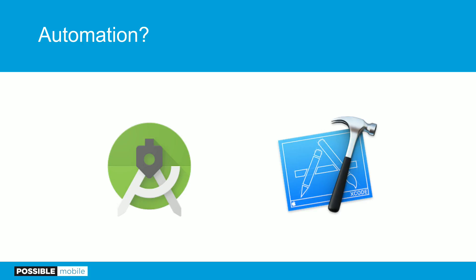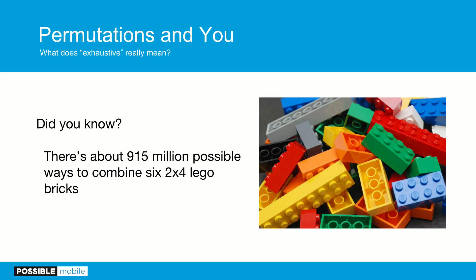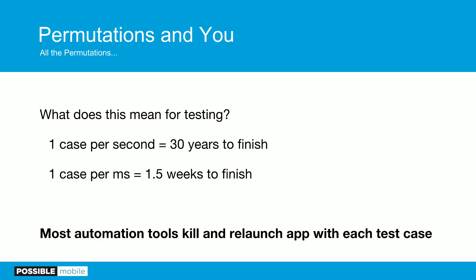Both Android Studio and Xcode support automation now. It's been an item in both Google and Apple's keynotes. So why am I not up here telling you how to write an automation test platform? I was playing LEGO Rock Band and there was a loading screen with this statistic — a good example of Big O time complexity notation. There are 915 million possible ways to combine six 2x4 LEGO pieces. If you try to brute-force test all your options, doing one case a second it would take 30 years. At one case per millisecond, you're still looking at over a week.